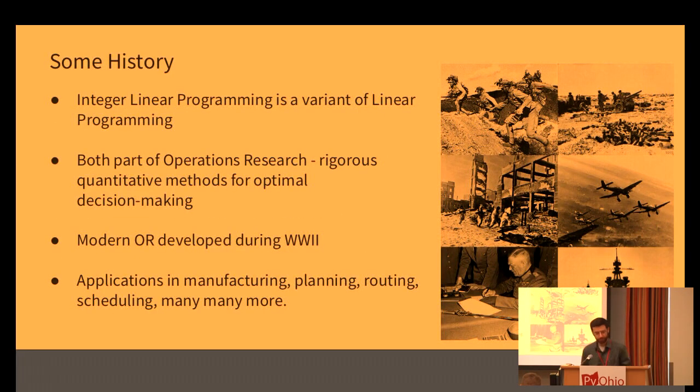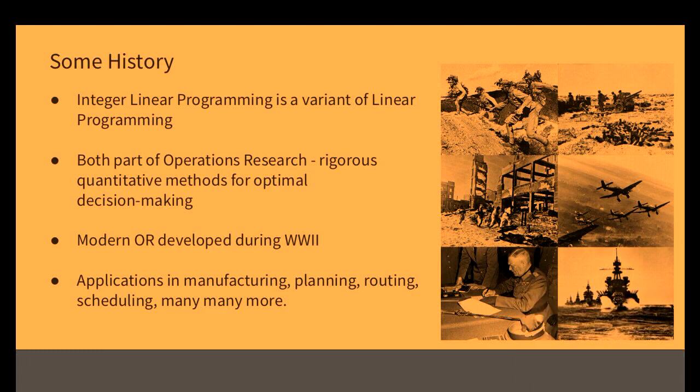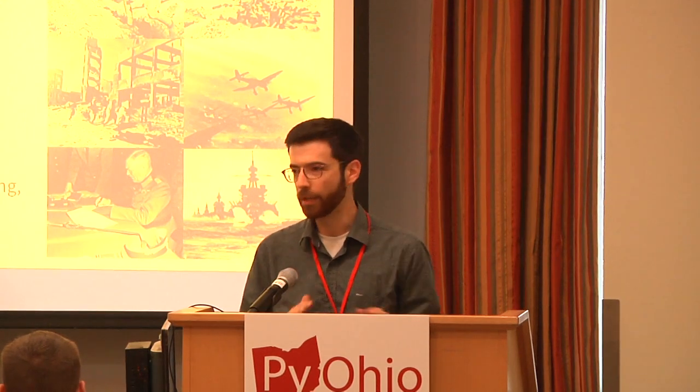Let's start with a little bit of history. Integer linear programming is a variant of linear programming. Both of these fields are part of operations research, which you can define broadly as the study of rigorous quantitative methods for optimal decision making. Modern operations research developed during World War II, when people had a lot of very high-stakes decision making they needed to do optimally. People had to answer questions like how to route supply lines through Europe, or how to optimally select bombing targets. They developed extremely useful quantitative methods, and in the decades after World War II there were applications in manufacturing, planning, routing, and scheduling across many different domains.